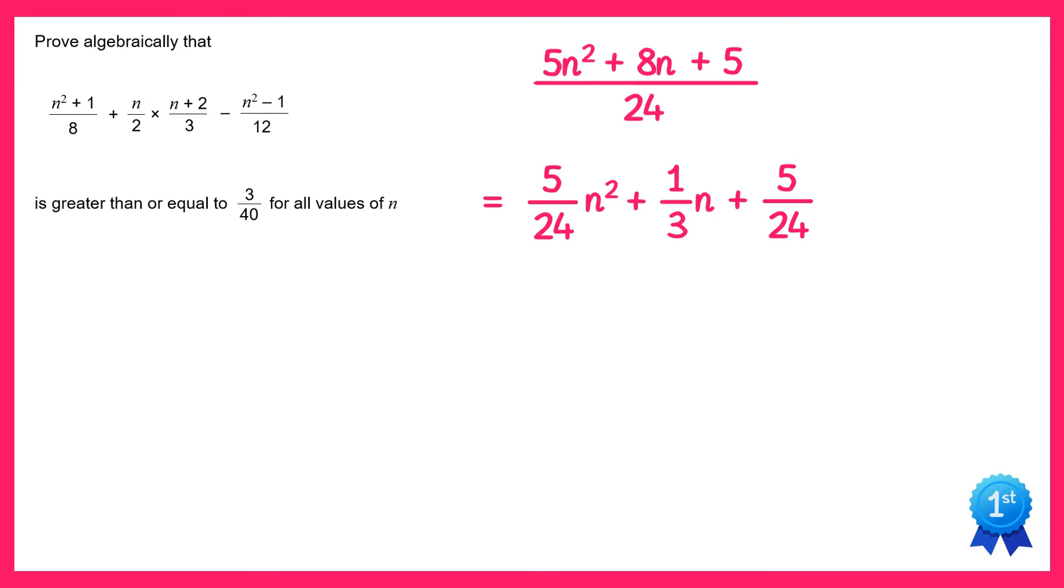If we now factorise out 5 over 24 from all of the terms, we get 5 over 24 times n squared plus 8 over 5n plus 1.